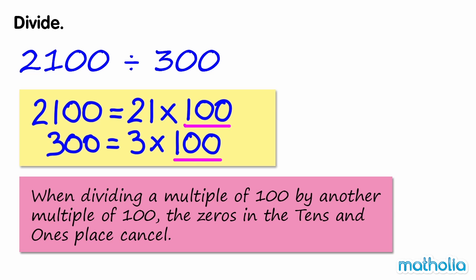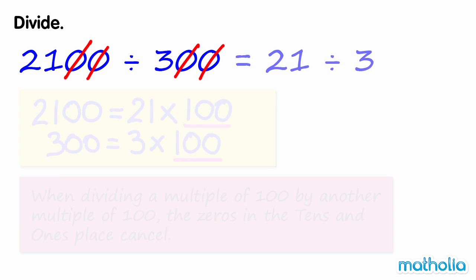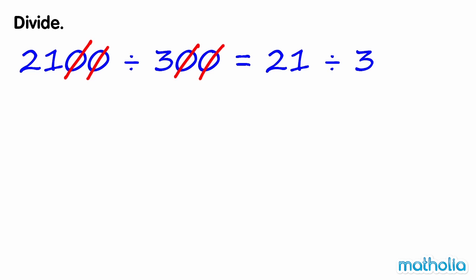When dividing a multiple of 100 by another multiple of 100, the zeros in the tens and ones place cancel. So 2100 divided by 300 is equal to 21 divided by 3. 21 divided by 3 equals 7. Therefore, 2100 divided by 300 also equals 7.